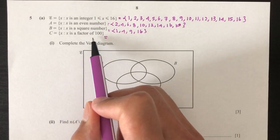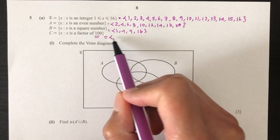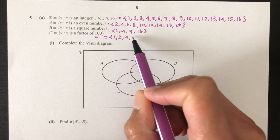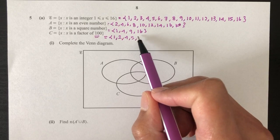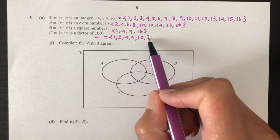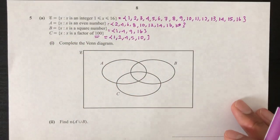And now for C, it has to be factor of 100. So what are the factors of 100? As we know it is 1, we have 2, we have 4, we have 5, we have 10. And that should be about it. So we have 1, 2, 4, 5, 10. That is set A, B, and C.